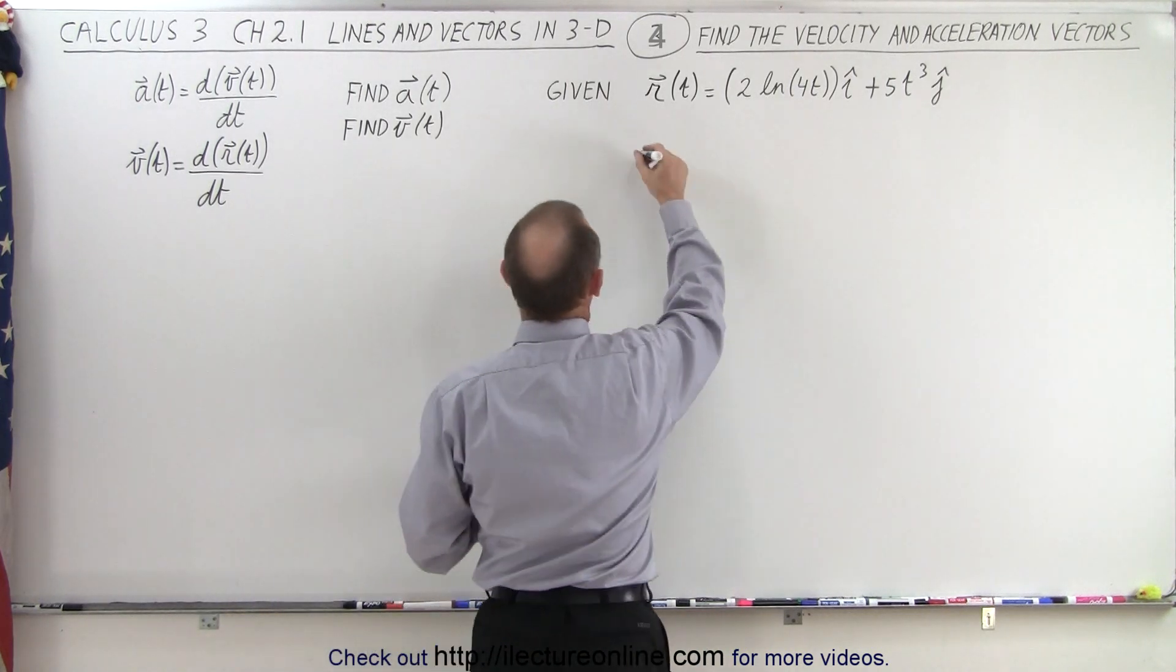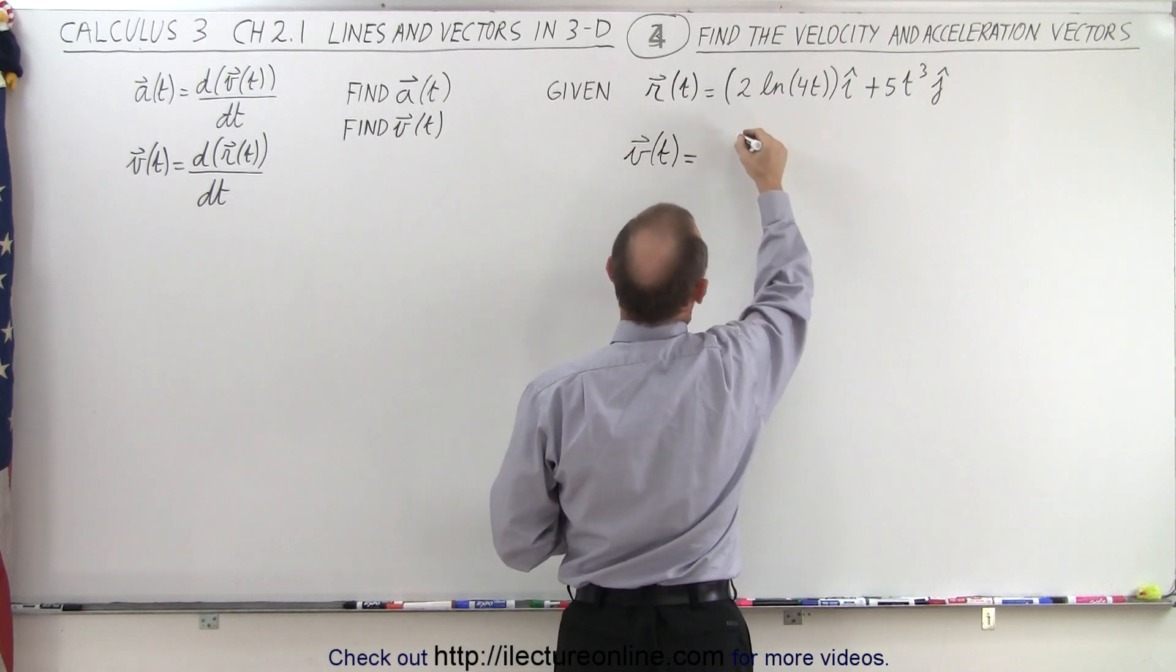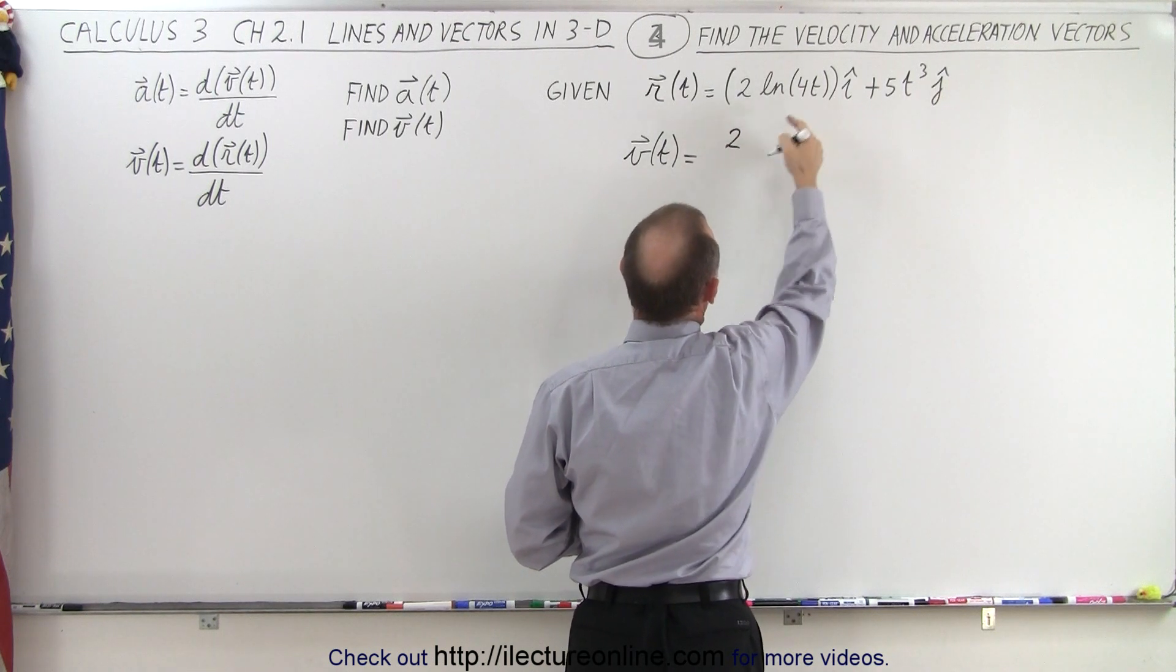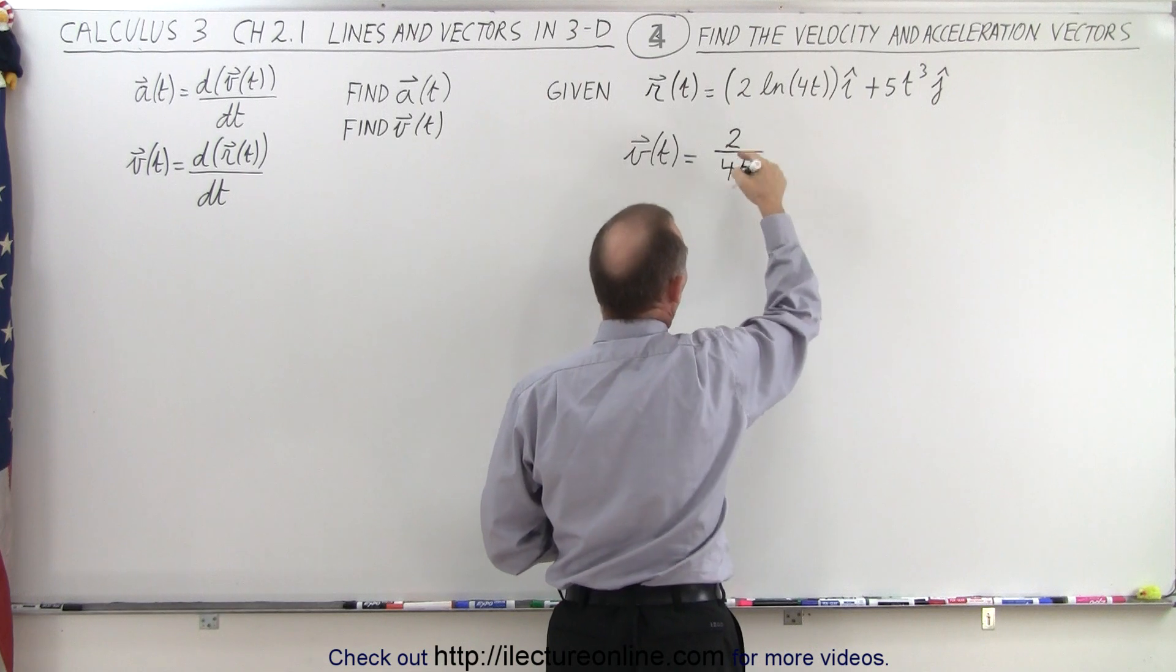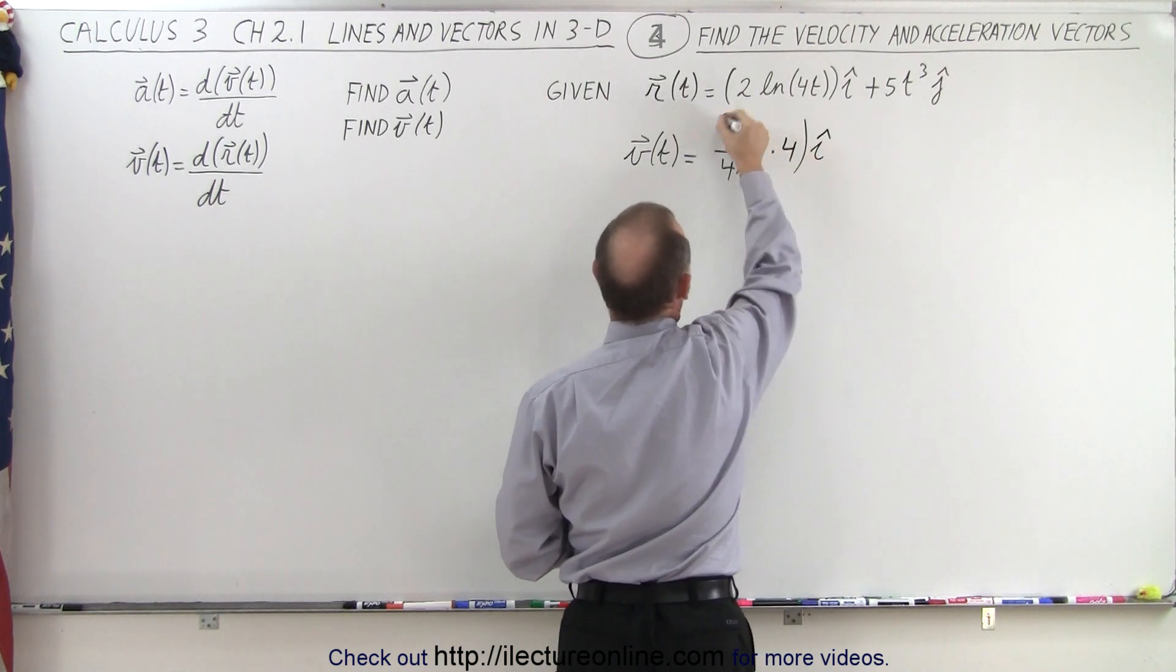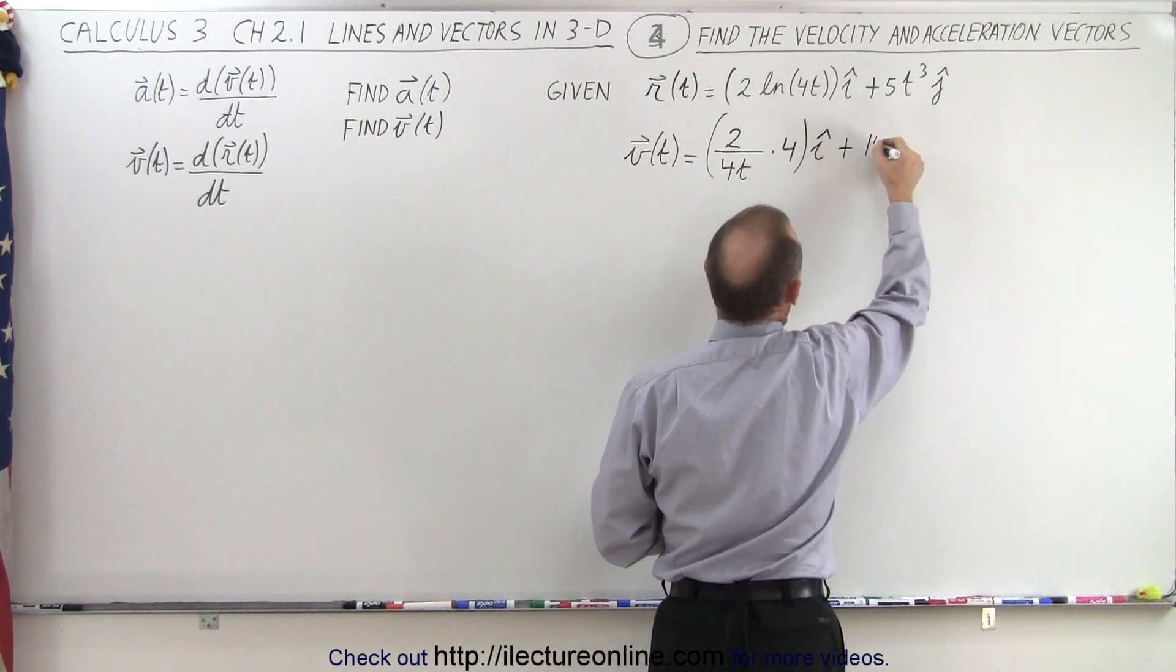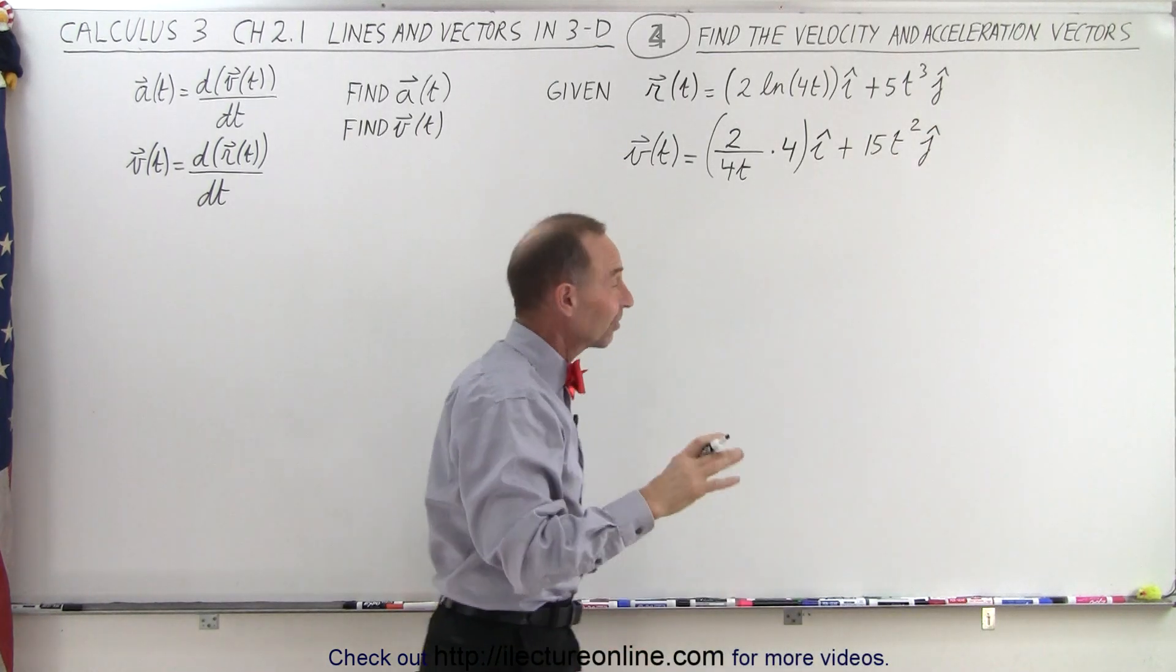That means the velocity vector as a function of time is going to be equal to the derivative of this. So we get two times the derivative of the natural log of 4t, that would be 1 over 4t, times the derivative of 4t, that would be times 4 in the i direction. I guess we'll have to clean that up. Plus 5 times 3, which is 15t squared in the j direction.